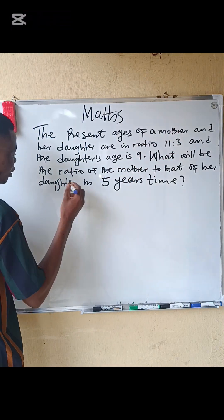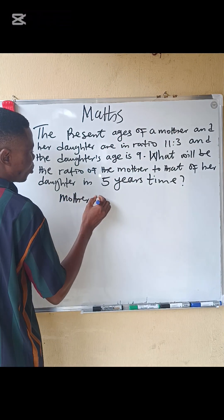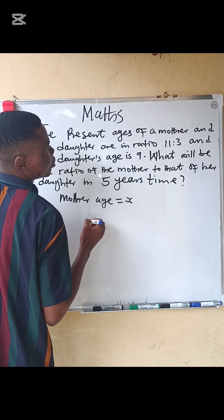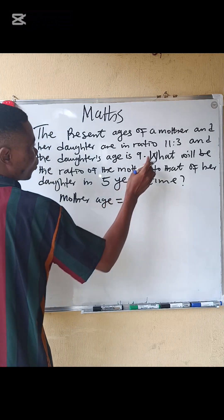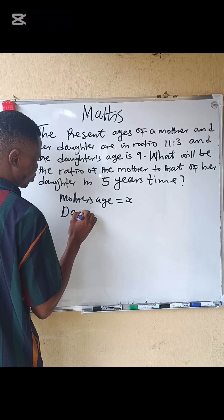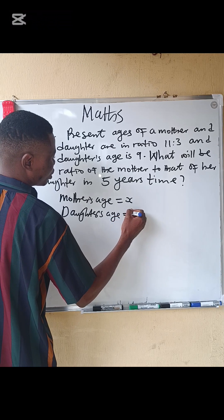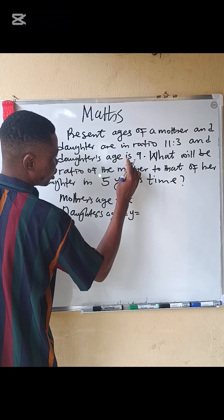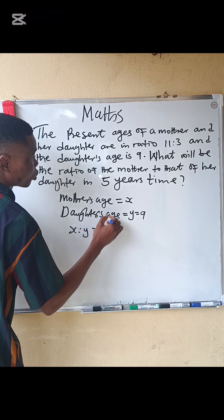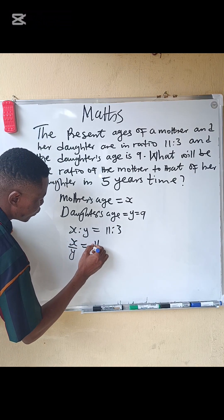From this question, let the mother's age be x and the daughter's age be y. The daughter's age y is given as 9. So we have x:y = 11:3, which we can also write as x over y equals 11 divided by 3.